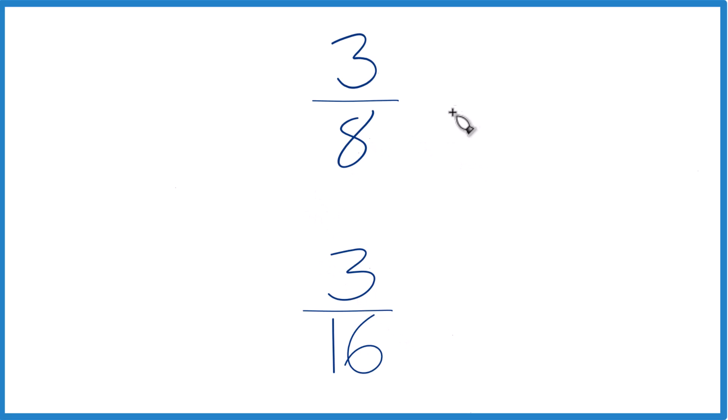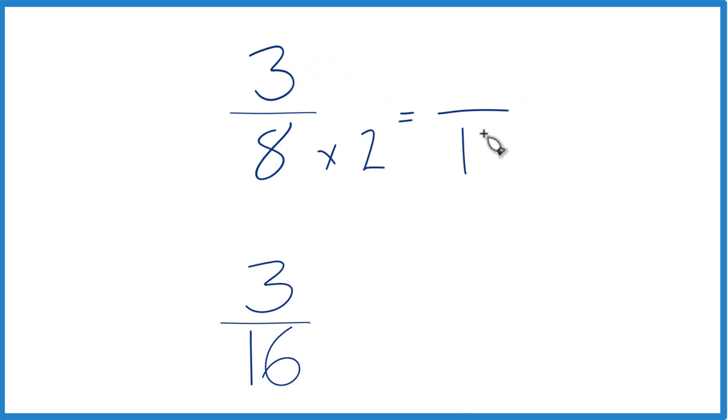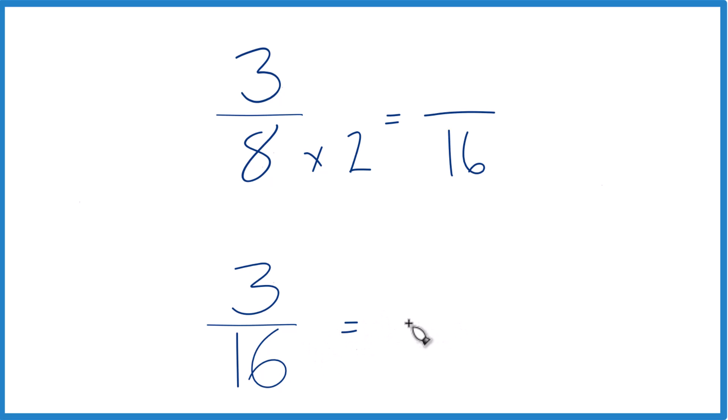The last way we could do this is get a common denominator. We could multiply 8 by 2, because that would give us 16. Down here we already have 16. So we have a common denominator.